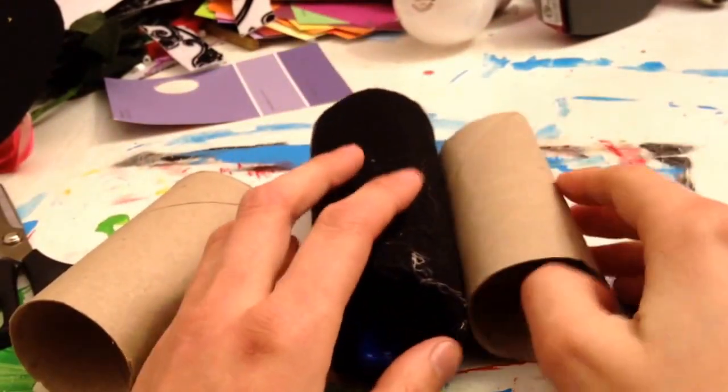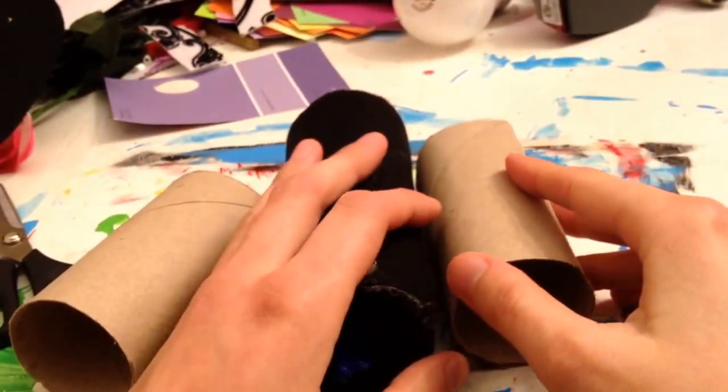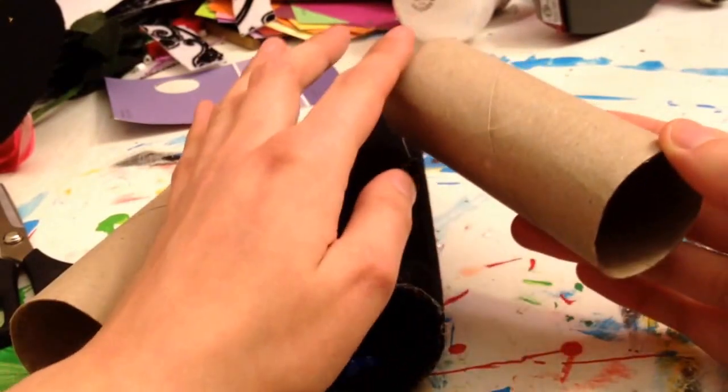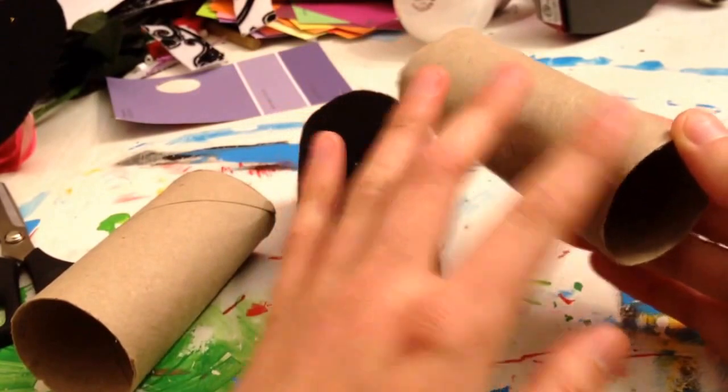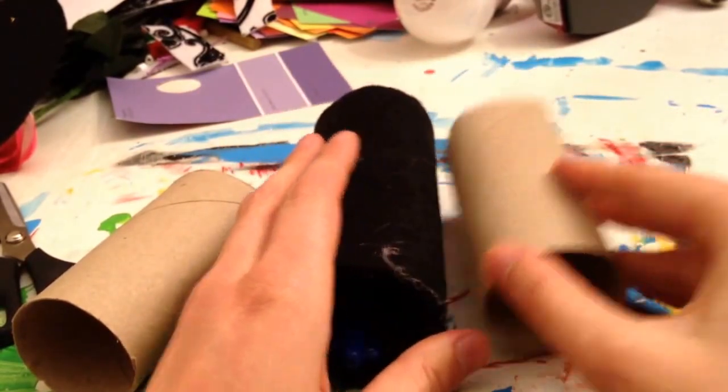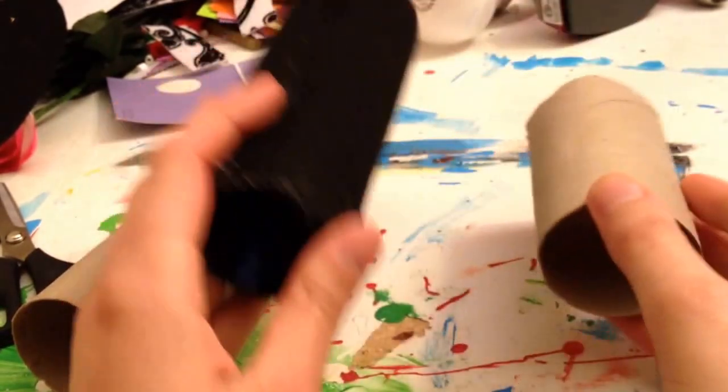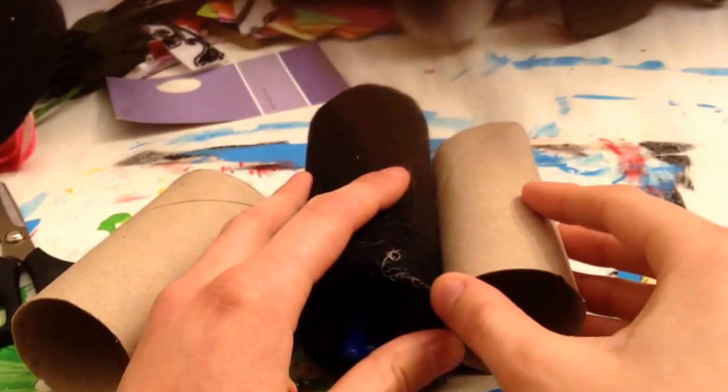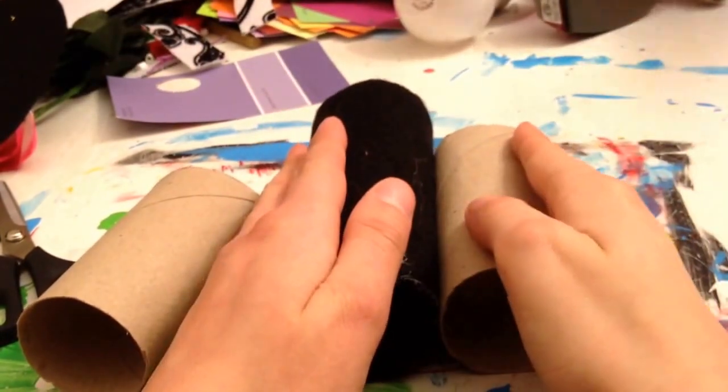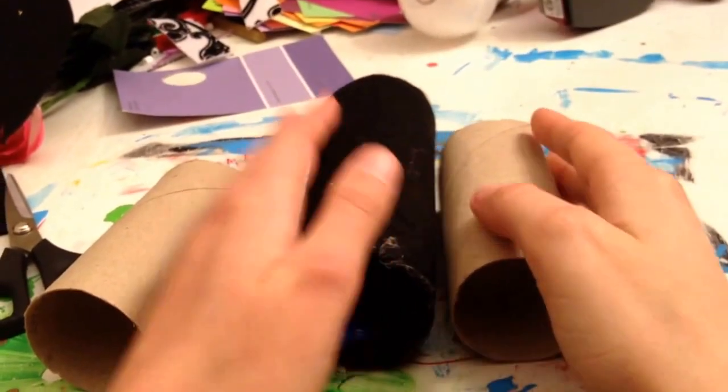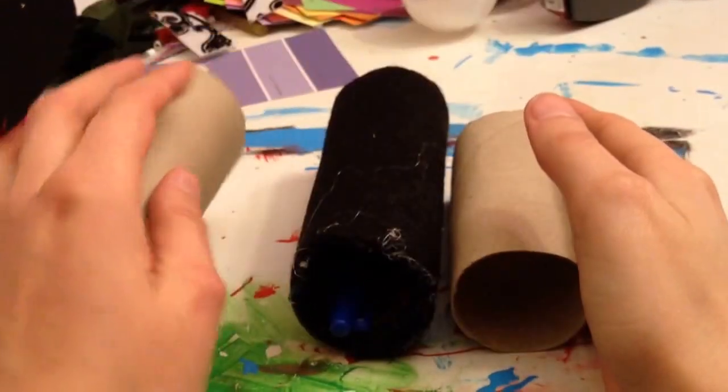But you're going to make one for every color. And then what you're going to do is basically glue it down. Put a string of glue all the way down wherever they're going to touch, whether it's on the top, a side, a bottom, wherever they're going to touch. You're going to put a string of glue and then hold it together for a few seconds until the glue hardens. And then that's just how you're going to build whatever shape you're going to use.